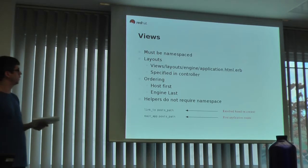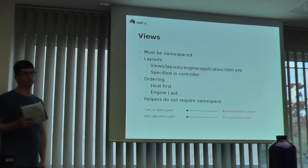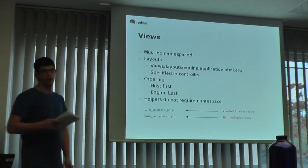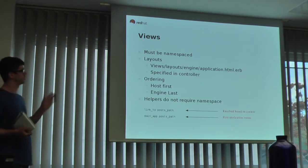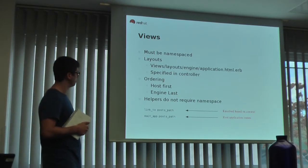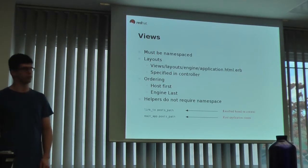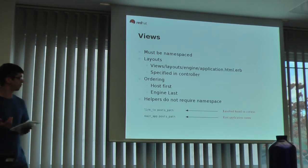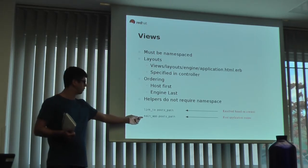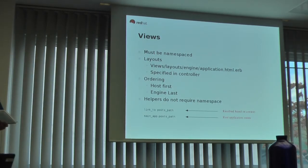Views are essentially exactly the same. Rails will always prefer anything in the host application first, so if you need to override views you put them in the same directory structure — for example in our foo engine, you'd place overrides under foo/views, and those will be loaded first. Helpers do not require a namespace to detect from which context they run. If you explicitly need to load something from the main host application, Rails provides a main_app method used to reference routes in the host application.